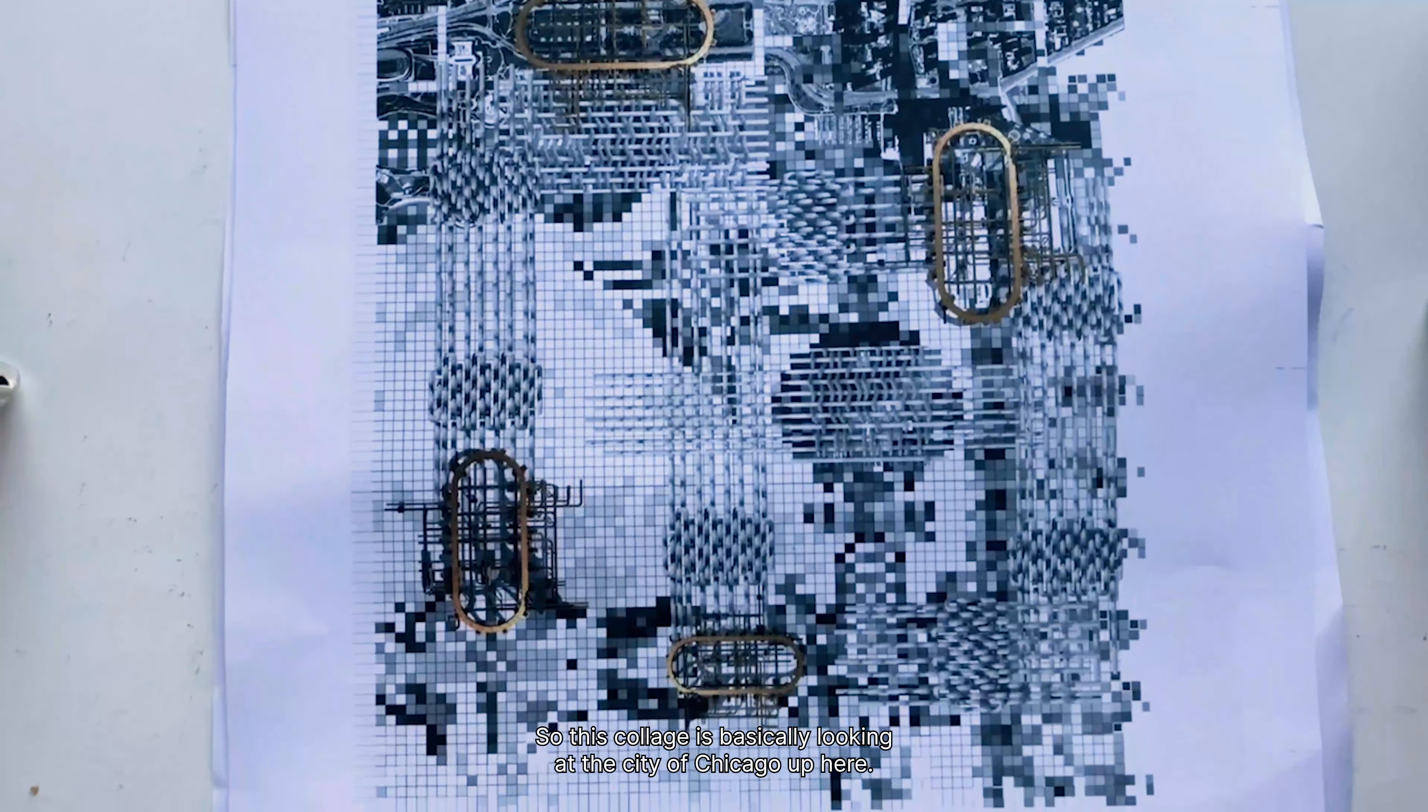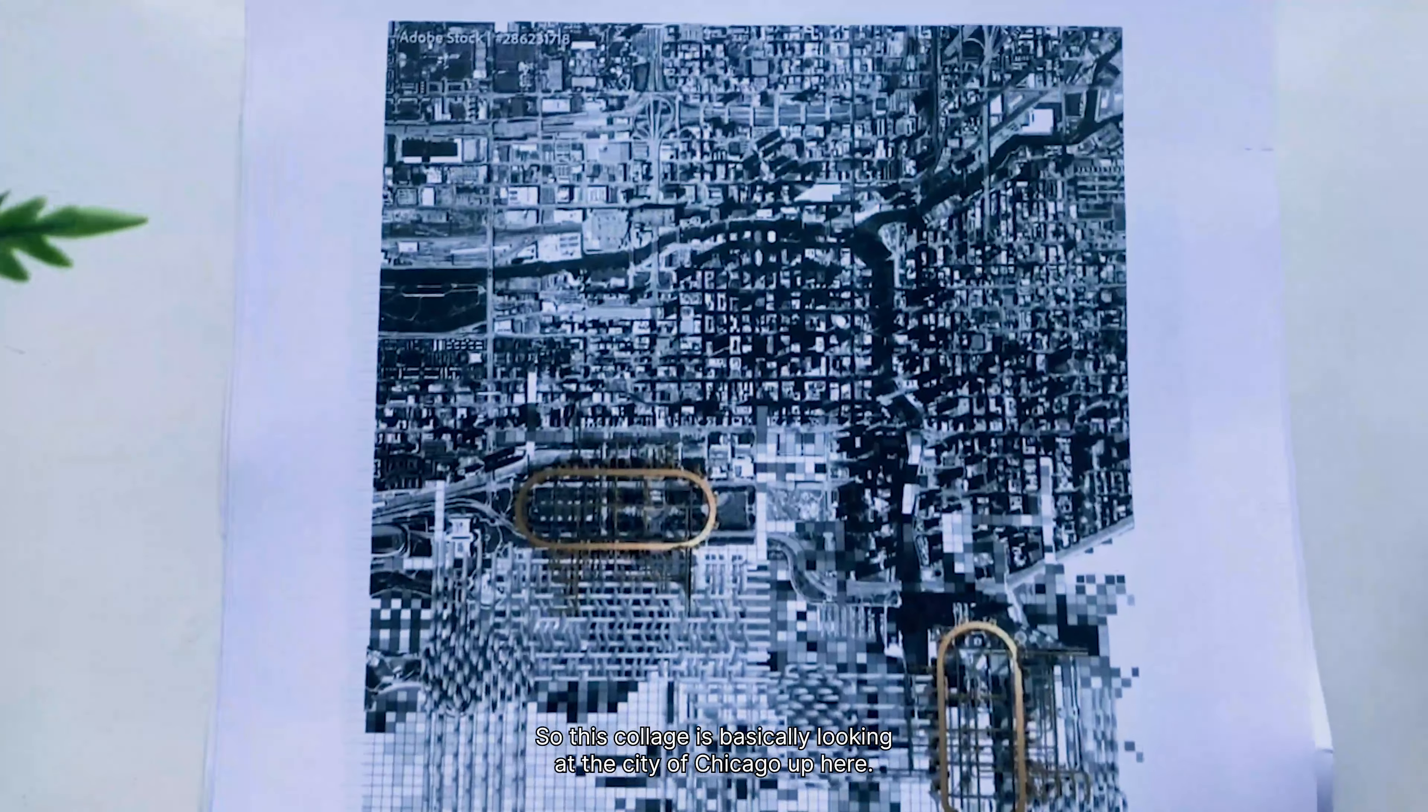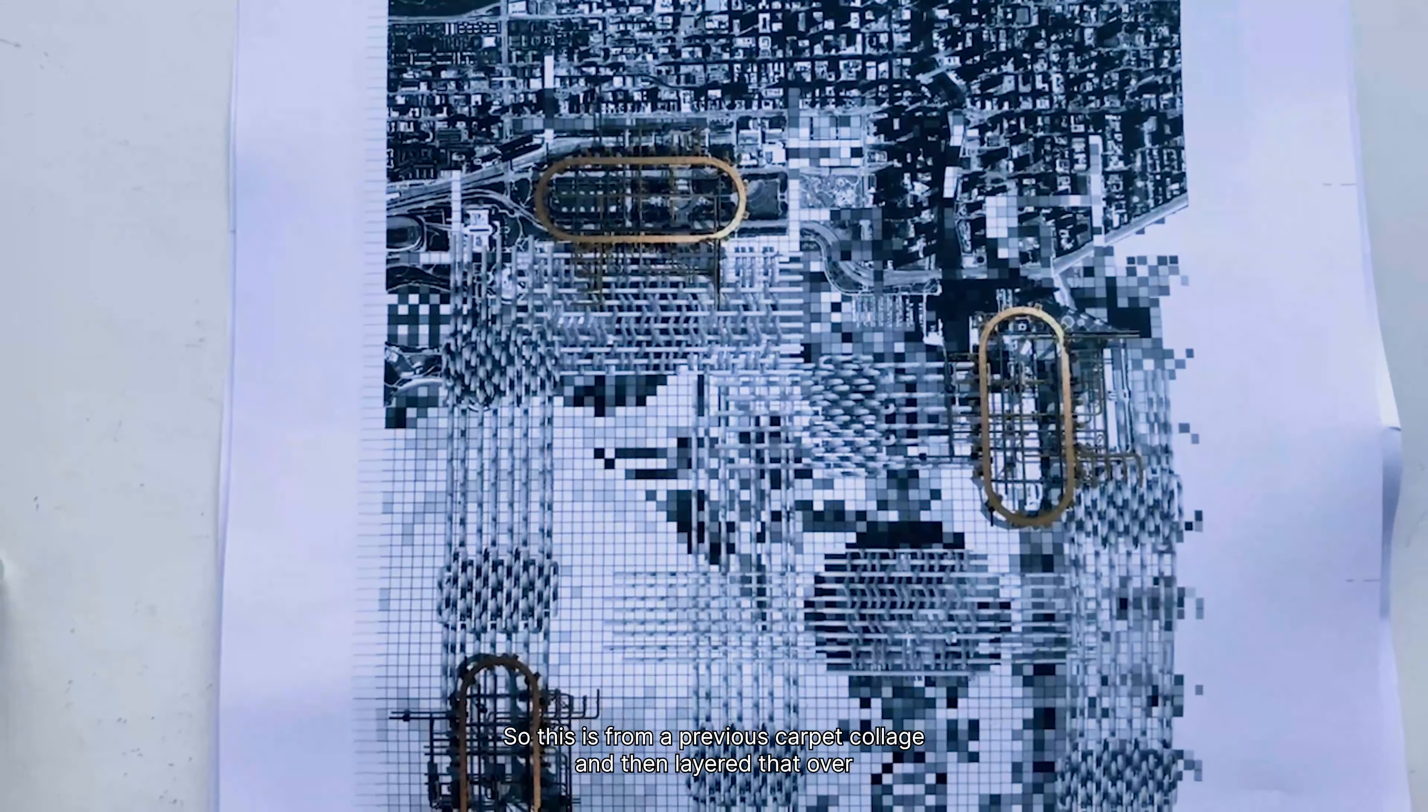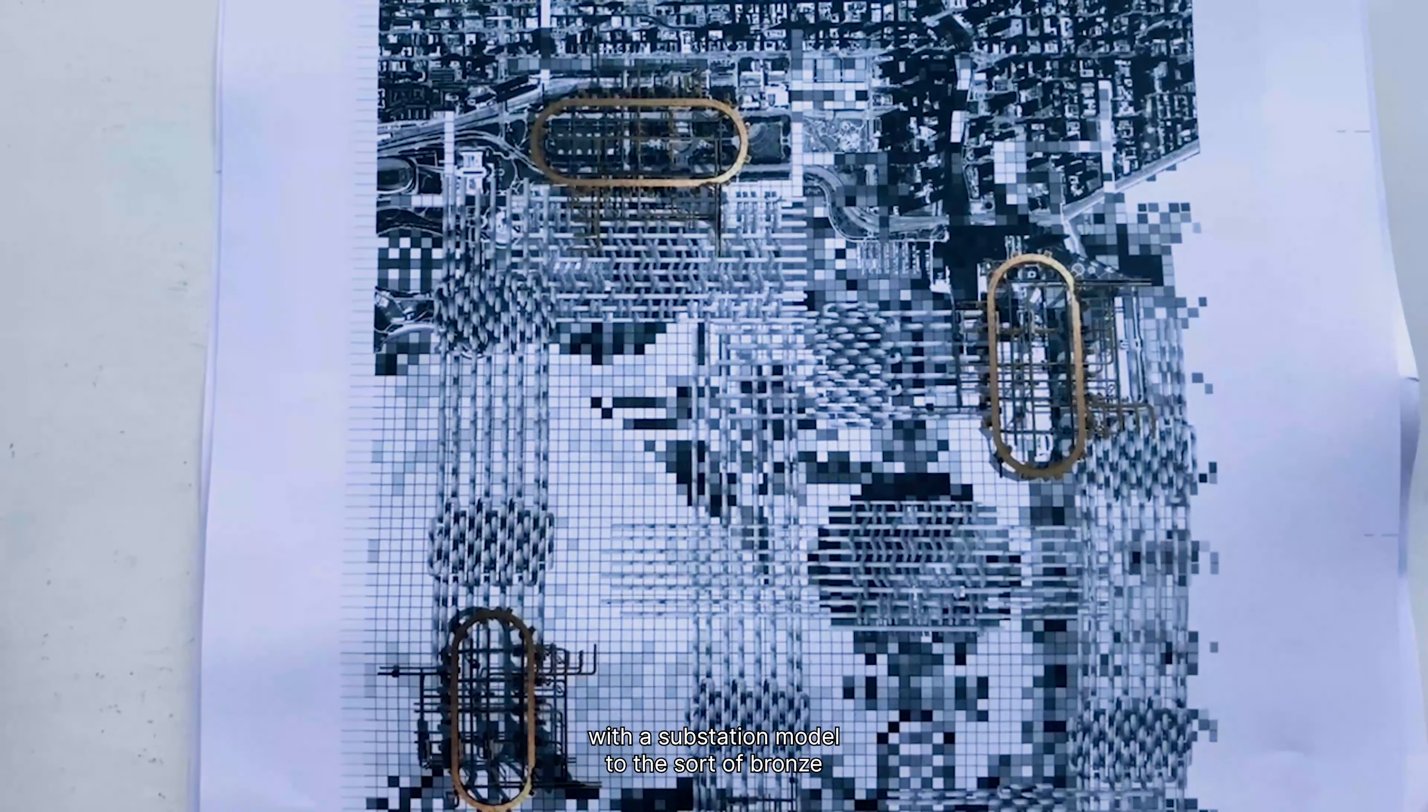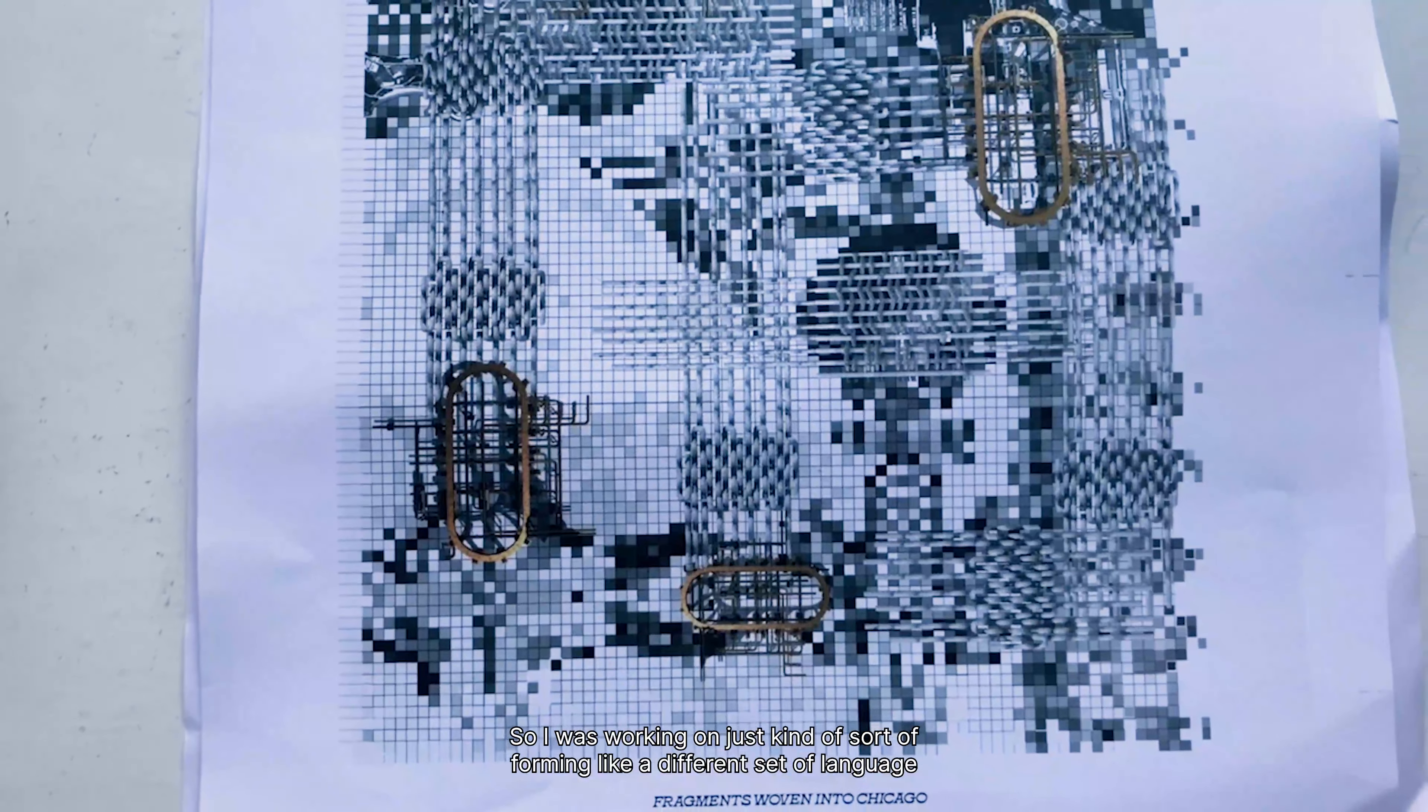So this collage is basically looking at the city of Chicago up here and then I've started to weave in my own pattern which I've pixelated. This is from a previous carpet collage and then laid that over with a substation model, so the sort of bronzy paperclip type structures, as well as some test renders from the weaves that I was working on just to start forming a different set of language.